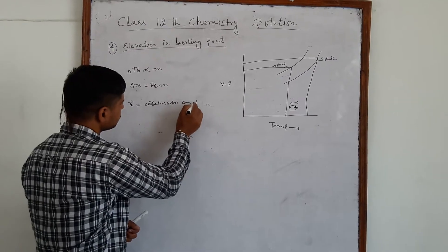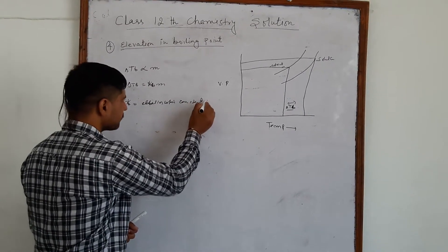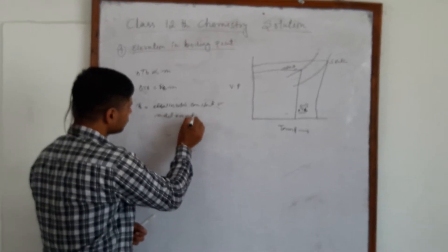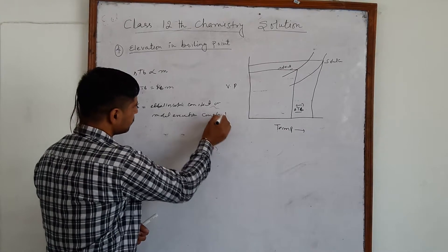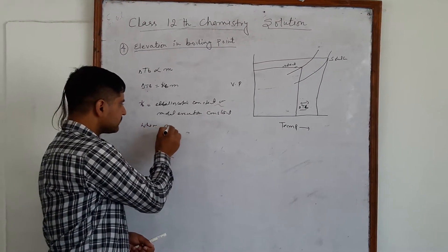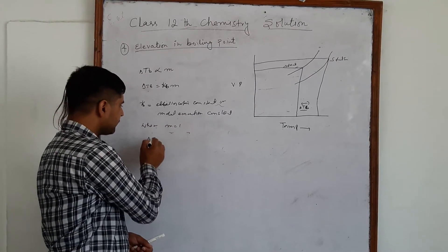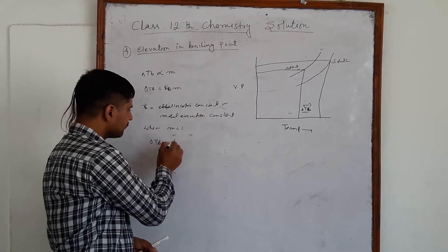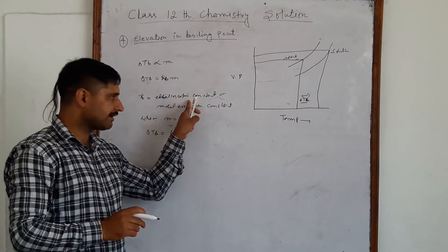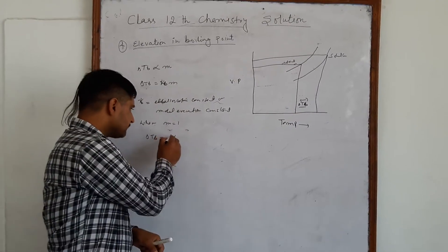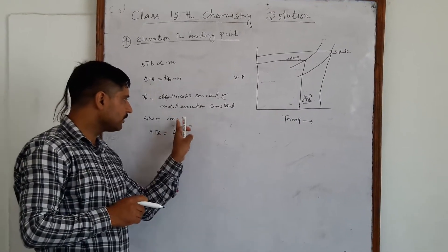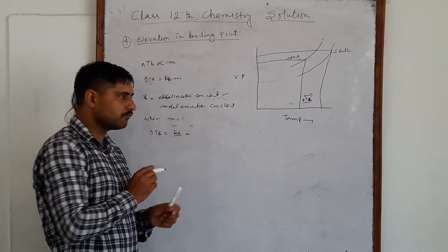Kb is also called the molar elevation constant. When the molar concentration M equals 1, delta Tb equals Kb. Hence, we can define the ebullioscopic constant as the elevation in boiling point when the molal concentration of the solution is equal to 1.